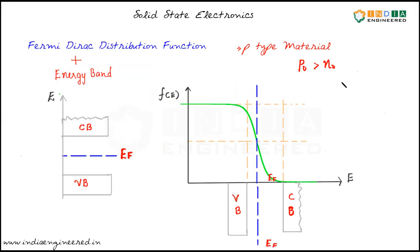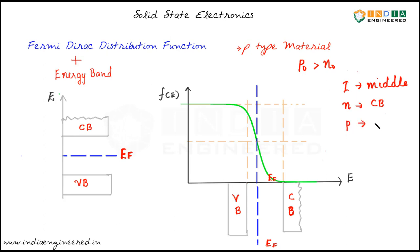So we have seen that in the case of intrinsic material, the Fermi level was around the middle; in the case of n-type, it was closer to the conduction band; and in the case of p-type material, it was closer to the valence band. The Fermi level is a natural reference point in our further discussion — we will see how it becomes useful in calculating the carrier concentration in a material.